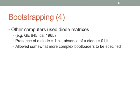You also have diode matrices. If you don't have transistors or read-only memory, you could use diode matrices, which allowed more sophisticated bootloaders. A diode represented a one, and the absence of a diode represented a zero.